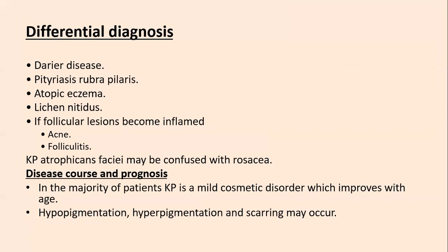Differential diagnosis of KP includes Darier's disease and PRP. In Darier's disease there are dirty brown plaques mainly involving seborrhoeic areas, while KP occurs mainly on extensor surfaces of arms, legs, and the face. PRP usually presents as follicular lesions but with additional erythema, scaling, and islands of sparing. Atopic eczema presents as erythematous and scaly lesions on flexural surfaces, face, and neck. Lichen nitidus presents as skin-colored papules; if follicular lesions become inflamed, acne and folliculitis should also be considered. In the majority of patients, KP is a mild cosmetic disorder that improves with age; hyperpigmentation and scarring can occur.